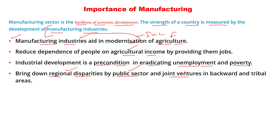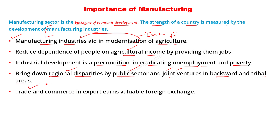Joint ventures में government और private firms मिलकर पैसा लगाते हैं, जिससे backward और tribal areas में development होता है और employment generate होता है। इसके अलावा trade and commerce होता है। जब manufacturing sector में products export किए जाते हैं तो foreign exchange earn होती है - जैसे American dollars हमारी country में आएंगे। यह पाया गया है कि जो countries high value products तैयार करते हैं वो prosperous होती हैं।